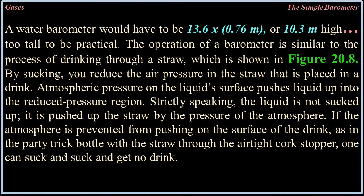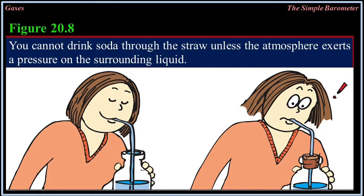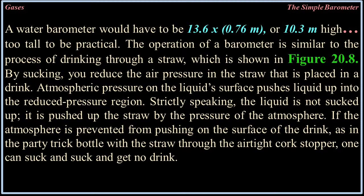So the height of the tube would have to be at least 13.6 times taller than the mercury column. A water barometer would have to be 13.6 × 0.76 = 10.3 meters high — too tall to be practical. The operation of a barometer is similar to drinking through a straw: by sucking, you reduce the air pressure in the straw placed in a drink. Atmospheric pressure on the liquid surface then pushes the liquid up into the reduced pressure region. Strictly speaking, the liquid is not sucked up — it is pushed up by the pressure of the atmosphere. If the atmosphere is prevented from pushing on the surface of the drink, one can suck and suck and get no drink.